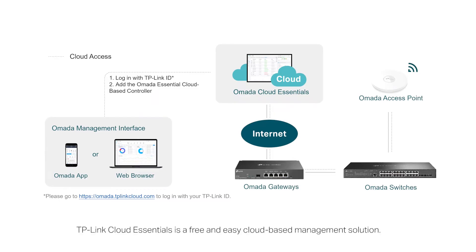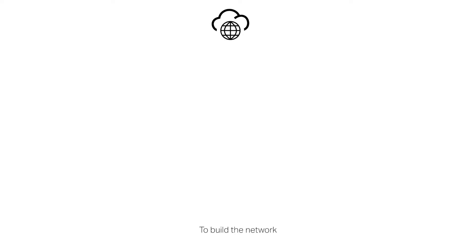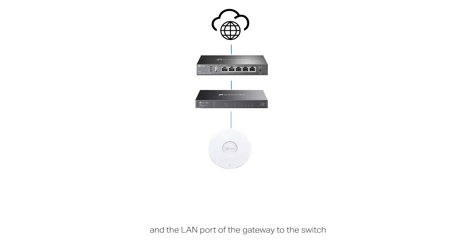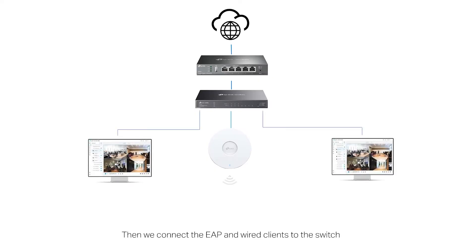TP-Link Cloud Essentials is a free and easy cloud-based management solution. This video introduces how to set it up with the Omada app. This is a typical topology to build the network: connect the WAN port of the router to the internet, and the LAN port of the gateway to the switch, then connect the EAP and wired clients to the switch.